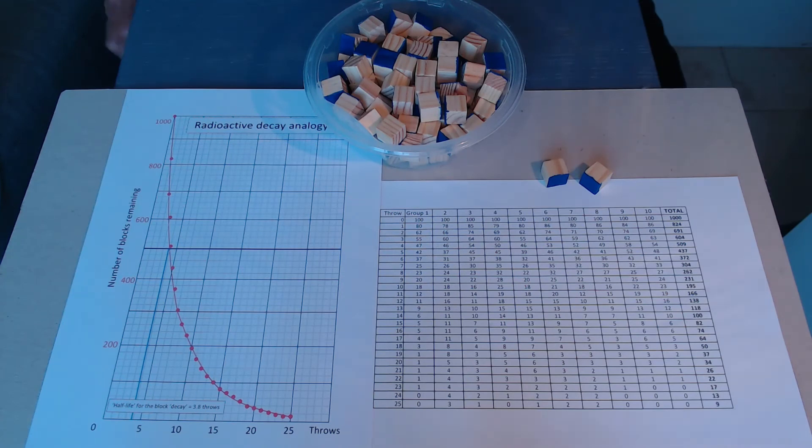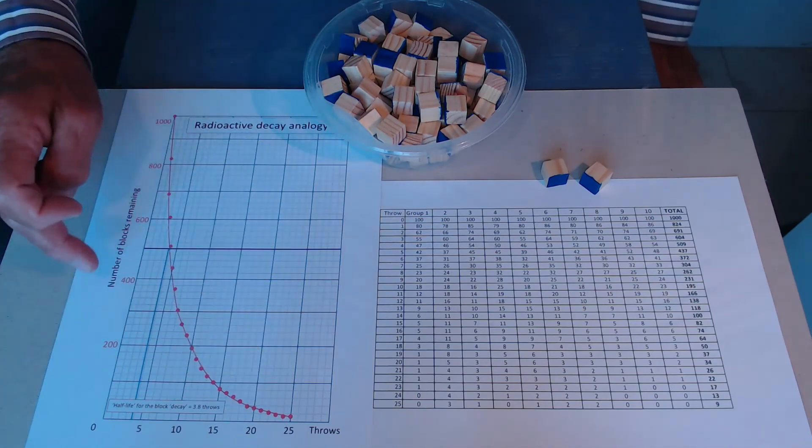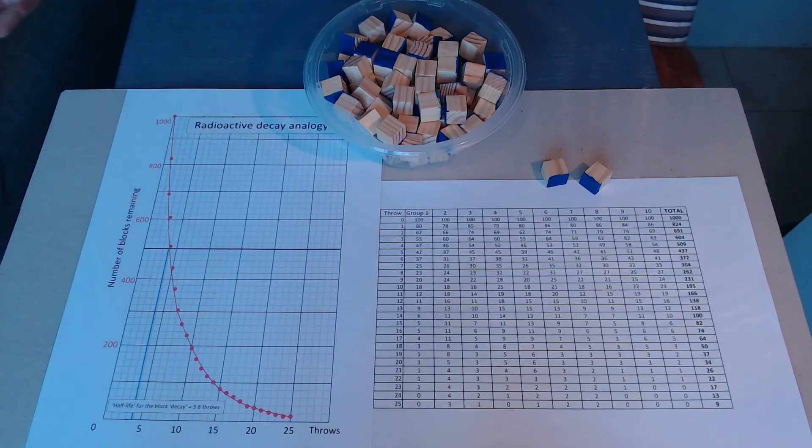If this had been a radioactive source decaying with time over a period of let's say 25 minutes, then the half-life for that radioactive source would have been three point eight minutes. So a really nice analogy and a very good exponential decay curve.